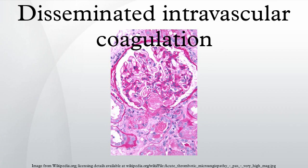The peripheral blood smear may show fragmented red blood cells due to shear stress from thrombi; however, this finding is neither sensitive nor specific for DIC. A diagnostic algorithm has been proposed by the International Society of Thrombosis and Haemostasis, which appears to be 91% sensitive and 97% specific for the diagnosis of overt DIC. A score of 5 or higher is compatible with DIC and it is recommended that the score be repeated daily, while a score below 5 is suggestive but not affirmative, and should be repeated only occasionally. The scoring system incorporates: presence of an underlying disorder known to be associated with DIC, platelet count, fibrin degradation products such as D-dimer, prolonged prothrombin time, and fibrinogen level.